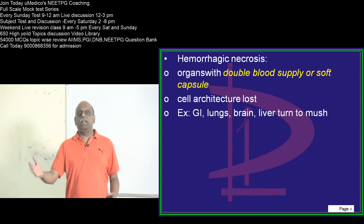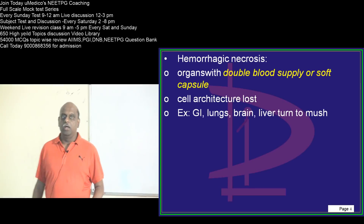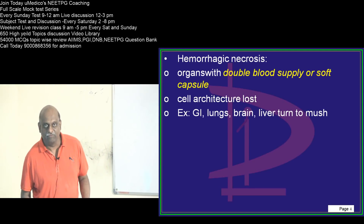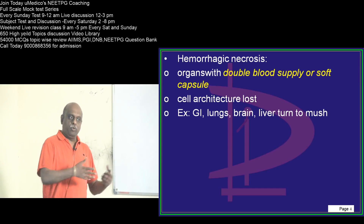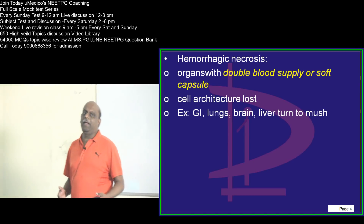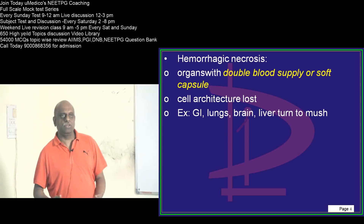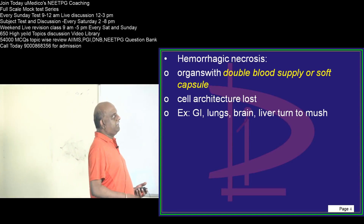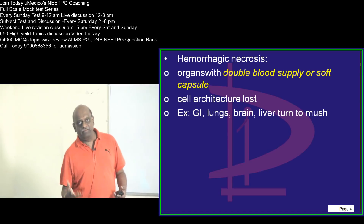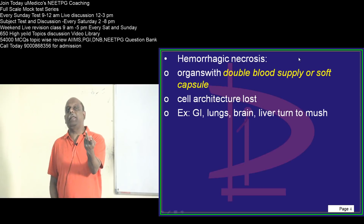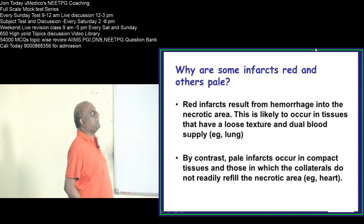What is hemorrhagic necrosis? In all those organs where there is dual blood supply — for example the gut, which has portal and systemic circulation, or the lung with pulmonary vessels and bronchial circulation, or the brain and the liver — in all these scenarios with dual blood supply, you have hemorrhagic necrosis.